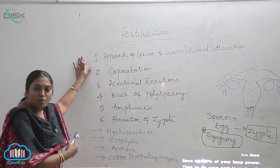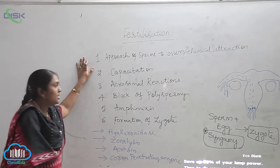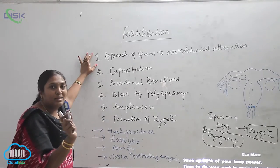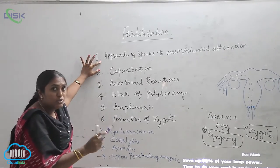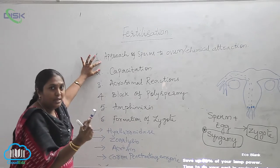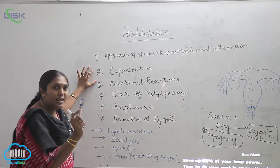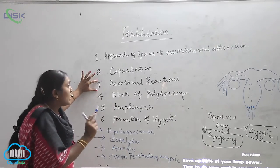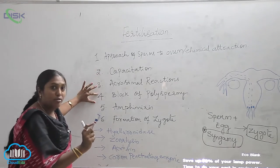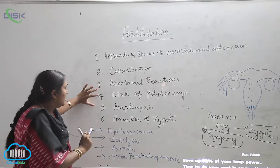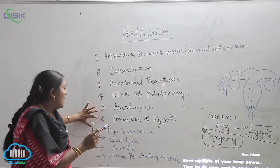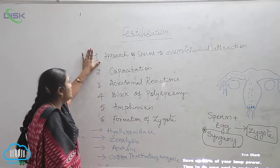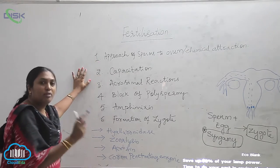The first step, very important and interesting, is the approach of sperms to the ovum or chemical attraction. Second is capacitation. Next is the acrosomal reactions, then block of polyspermy, fifth is amphimixes, and last is the formation of zygote. Now let us discuss each and every one in detail.